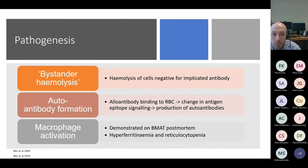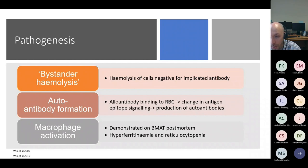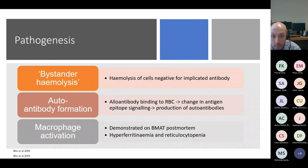The pathogenesis of hyperhemolysis remains poorly understood, but there are several proposed mechanisms. The first is bystander hemolysis, in which there is antibody destruction of both antigen-positive cells and antigen-negative cells. It is thought that because sickle cells are more susceptible to complement, this is why hyperhemolysis is more common in sickle cell disease. There are also cases where evidence of autoantibody formation has been observed.